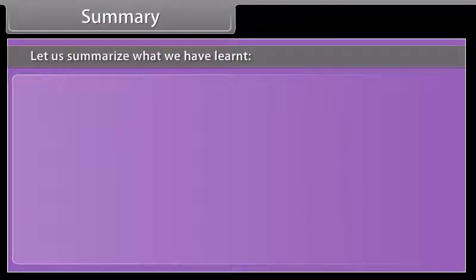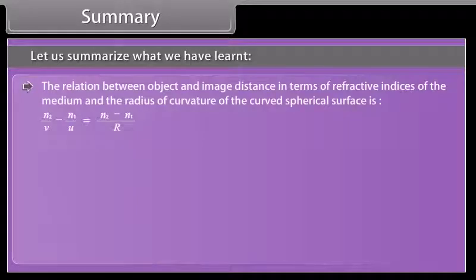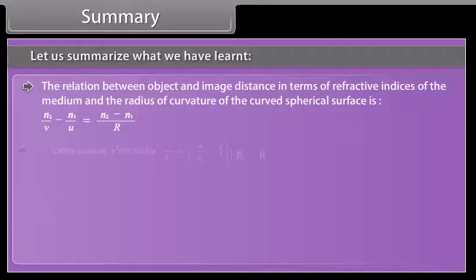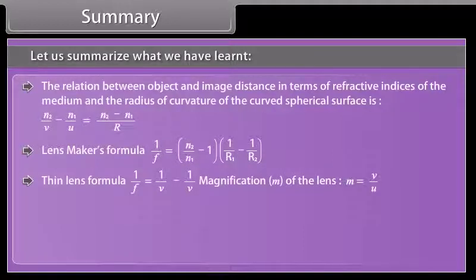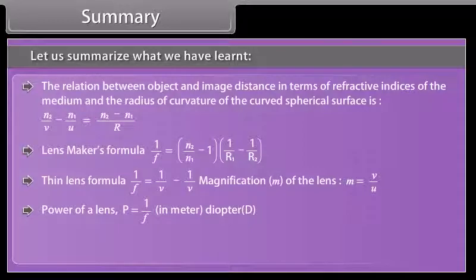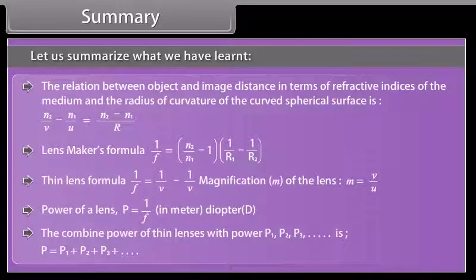Summary. The relation between object and image distance at a spherical refracting surface is: N2/V − N1/U = (N2 − N1)/R. The lensmaker's formula and the thin lens formula give the focal length of a lens. Magnification M = V/U. Power of a lens P = 1/F (in meters), measured in diopters. The combined power of thin lenses is P = P1 + P2 + P3 and so on.